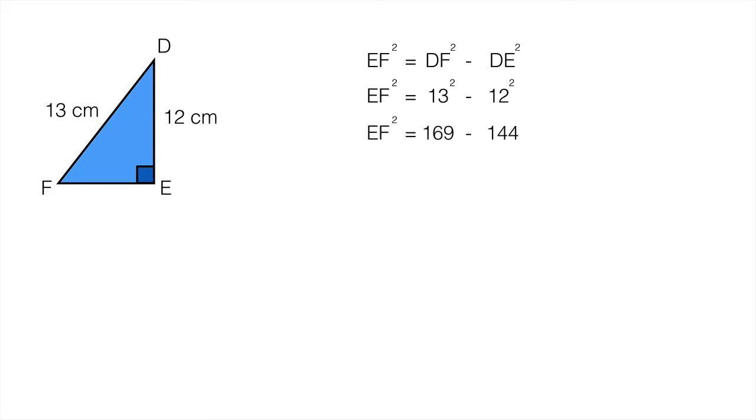13² is 169. That's a good fact to learn that one. That comes up quite a lot in Pythagoras. So 13² is 169 and 12² is 144. 169 minus 144 is 25.